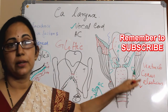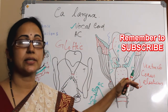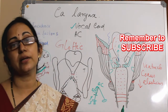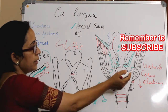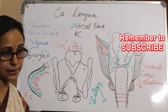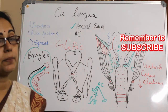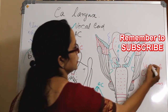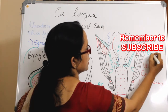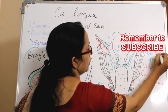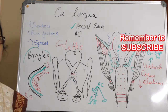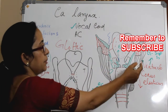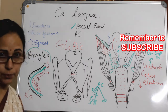The inferior spread is limited by the conus elasticus but is commoner than the superior spread, and inferiorly it spreads to the subglottis. Superiorly, if the ventricle is breached, it becomes a glottosupraglottic cancer. Once breached, it becomes a glottosupraglottic tumor, as already explained in the supraglottic spread. Glottosupraglottic spread superiorly and inferiorly to the subglottis.